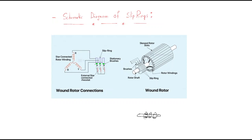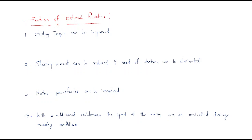The most important function of slip rings is to connect external resistance to the phases. By adding external resistance, we gain several advantages. First, the starting torque can be improved. Generally, starting torque is proportional to rotor resistance. By externally adding resistance, the total rotor resistance — rotor resistance plus external resistance — is increased, and therefore the starting torque will be improved.